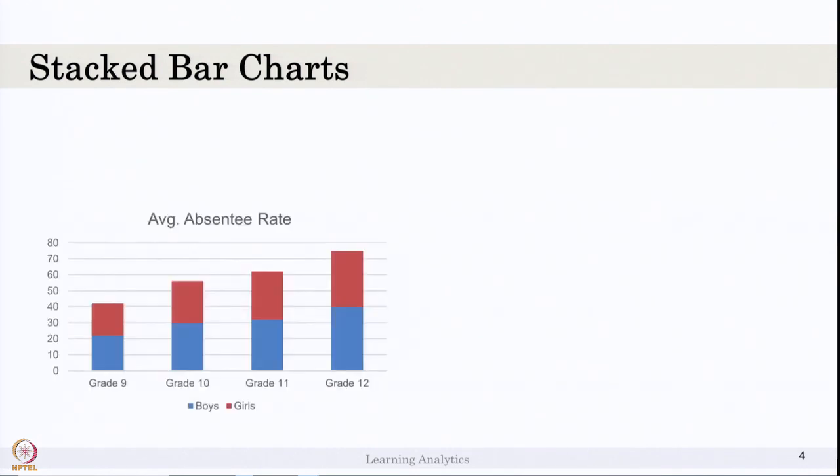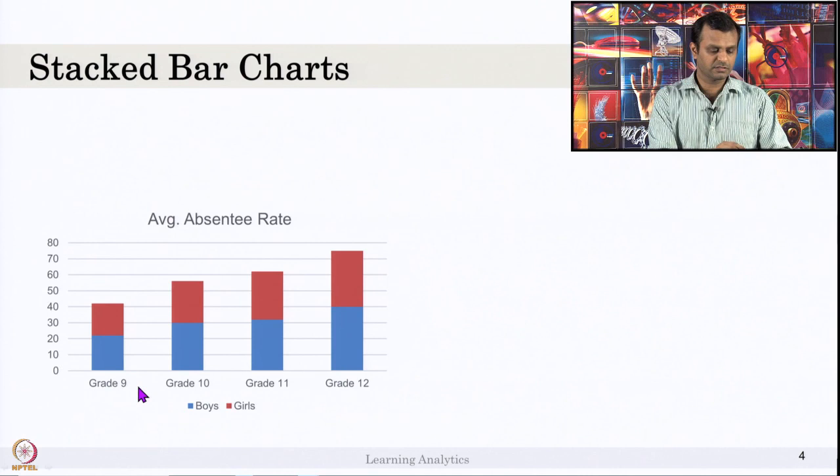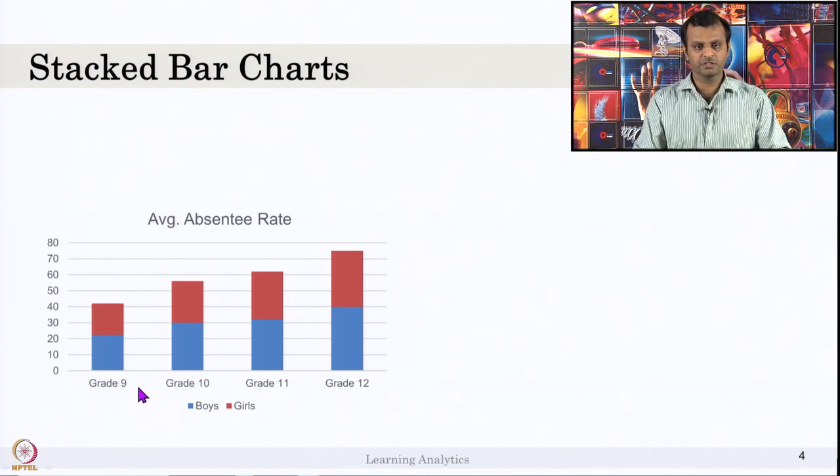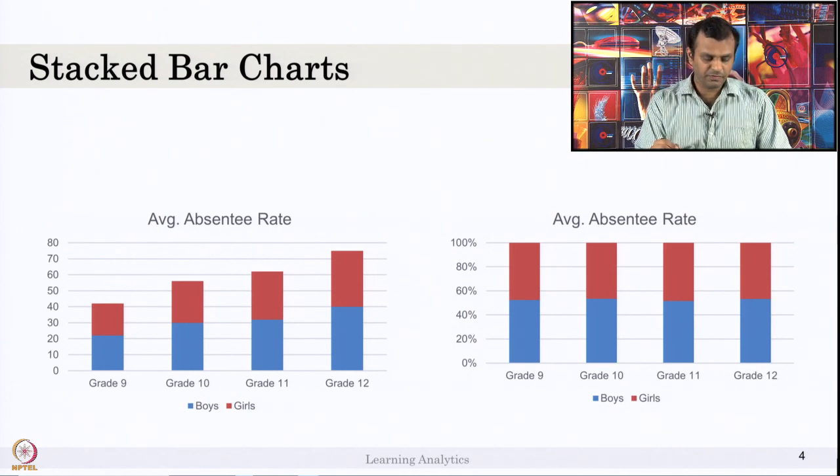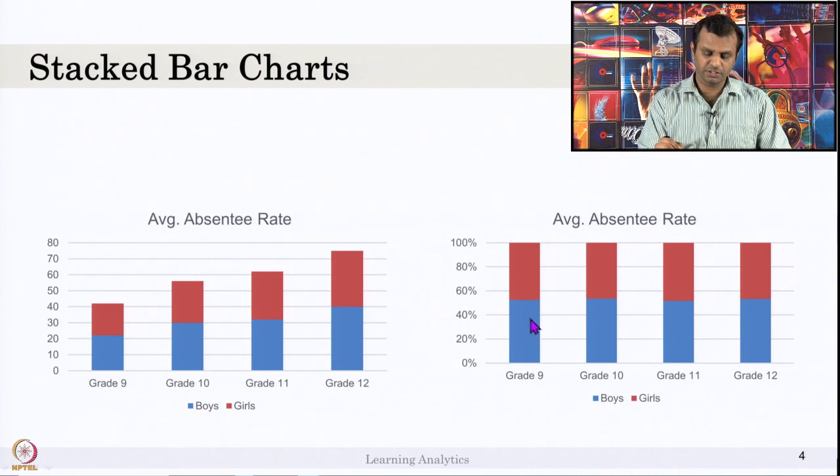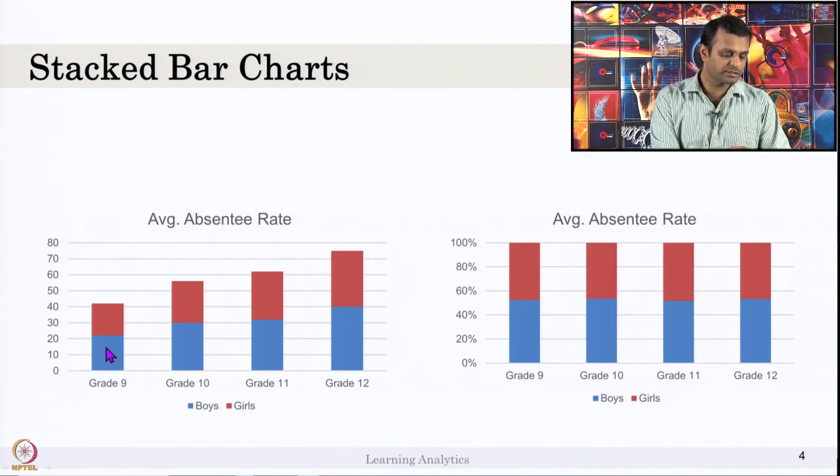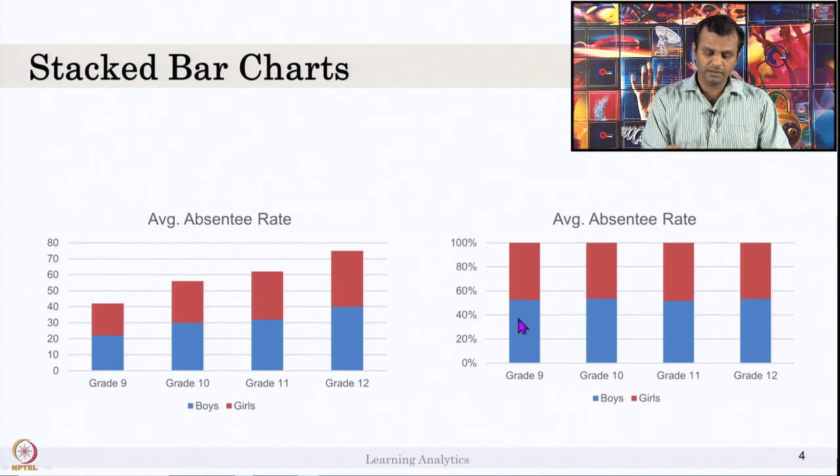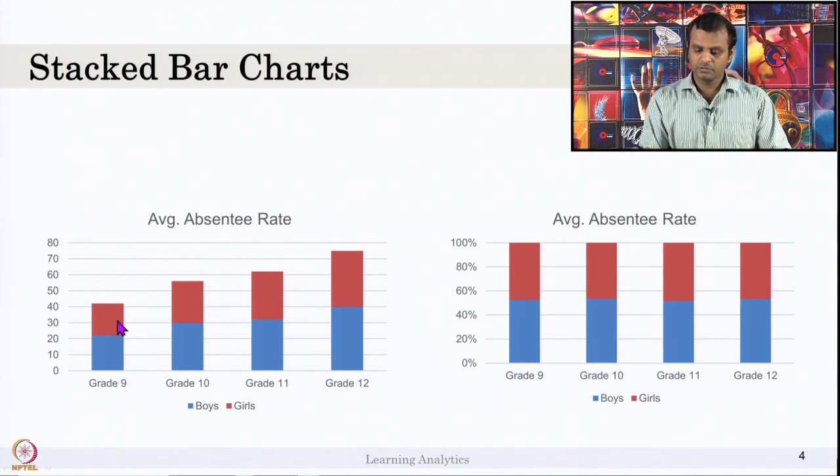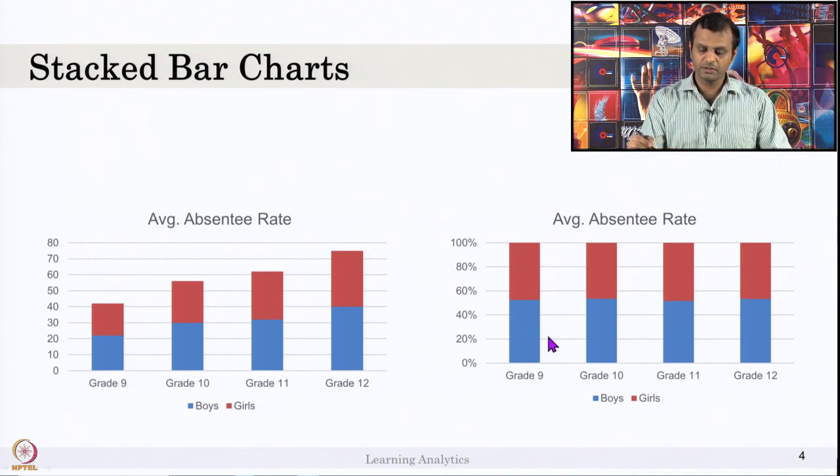There is a variation of stacked bar chart. This is the stacked bar chart, and the variation is converting it to 100 percentage. Here the value will be represented as percentage instead of the absolute value, say 22 percent of boys' absentee average for grade 9. Here that will be represented as a percentage compared to total value. This is a stacked bar chart adjusted for percentage.